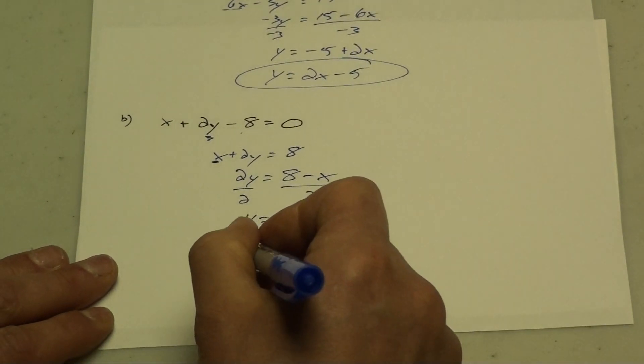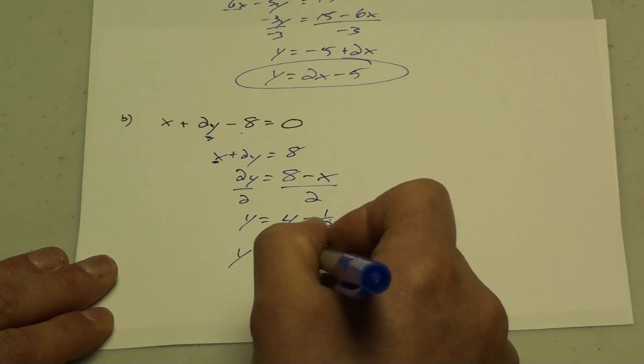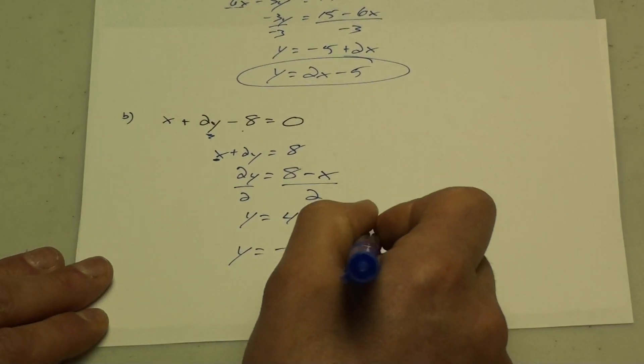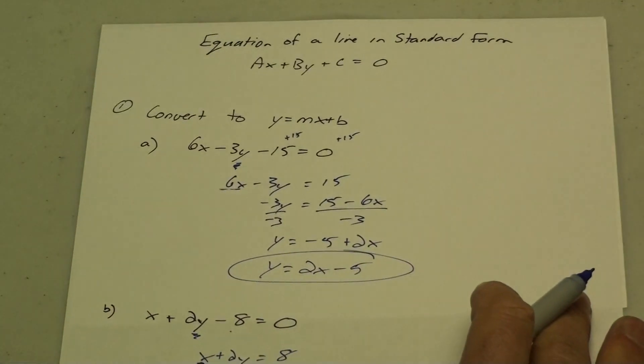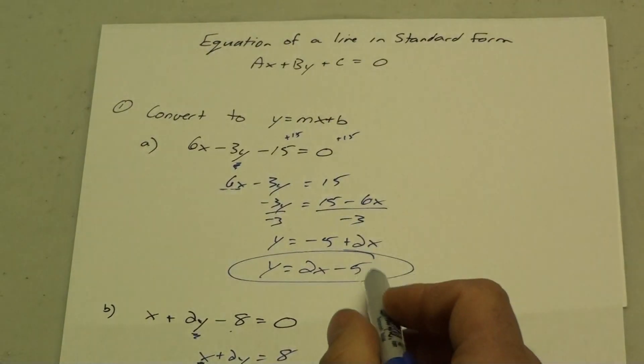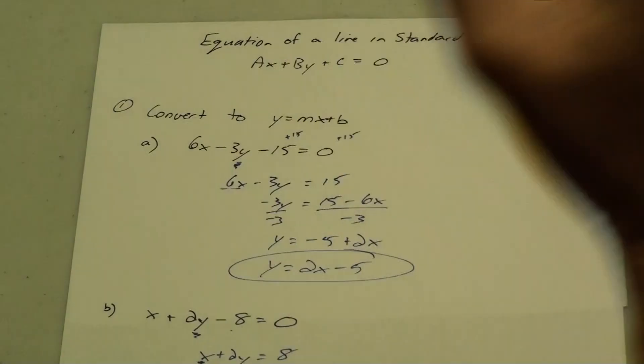I can rearrange it if I want to put my slope first, and then plus 4. So this is rearranging an equation of a line from standard form into slope y-intercept form. Thank you very much.